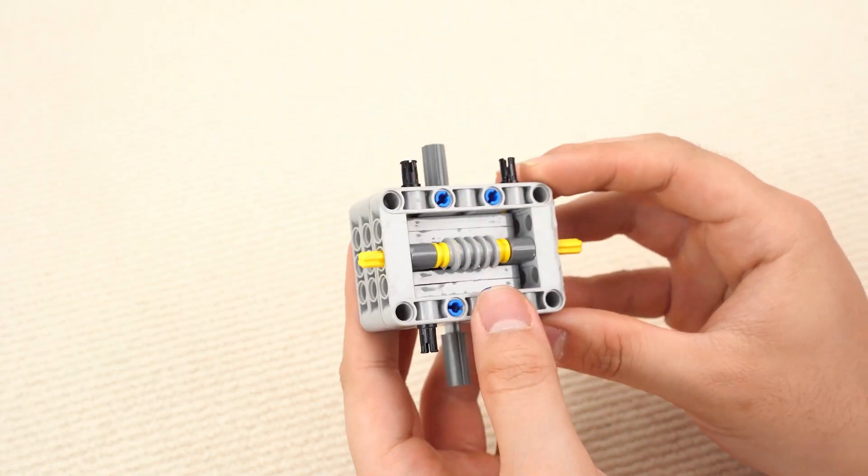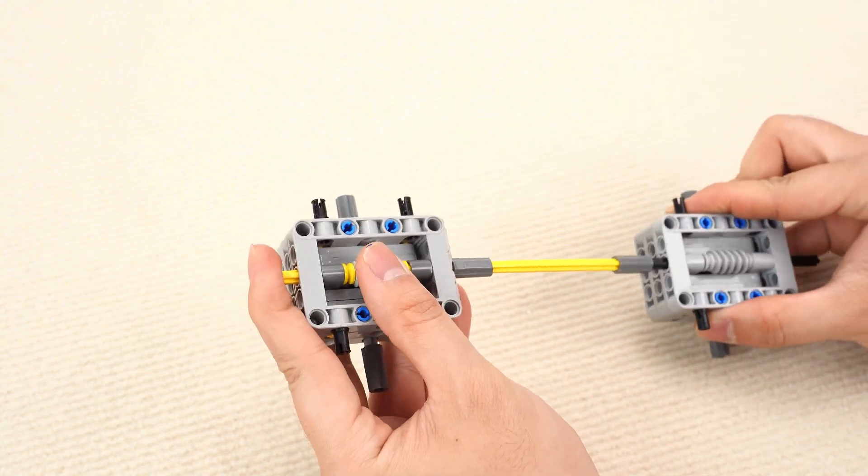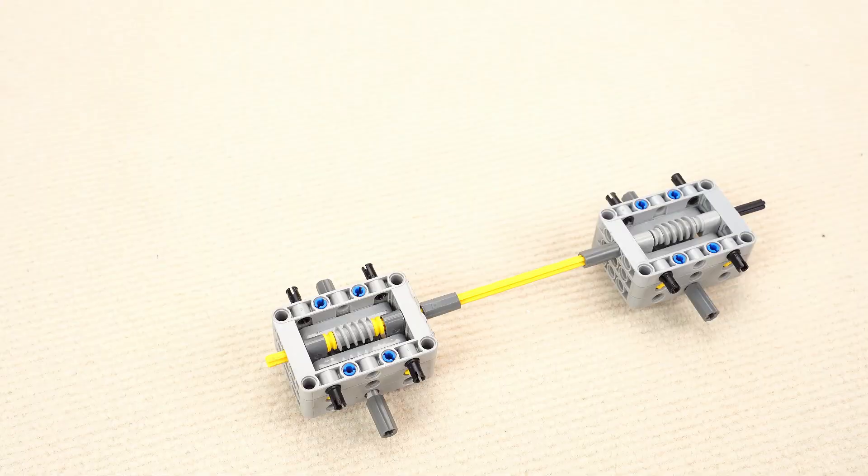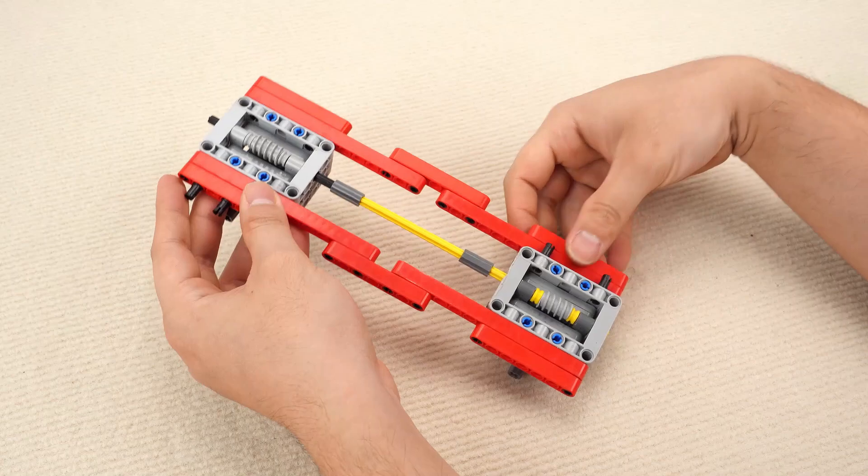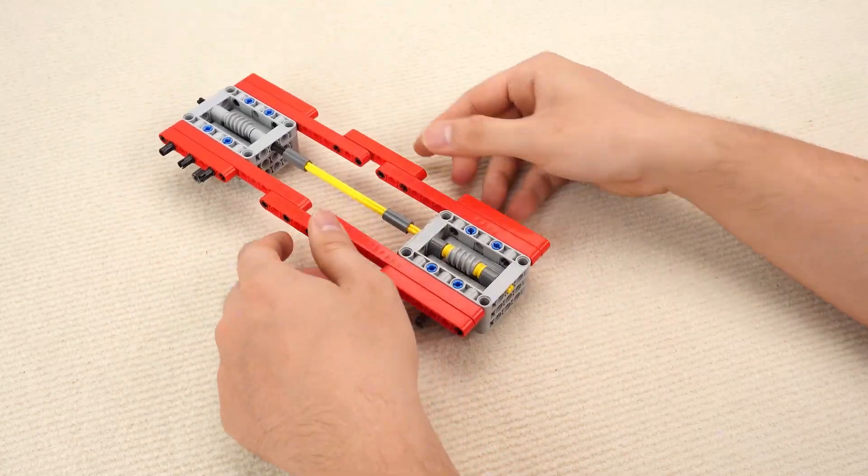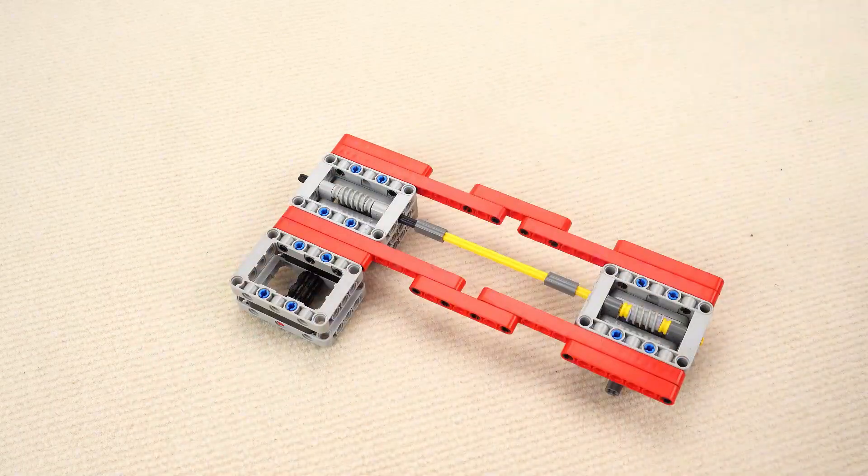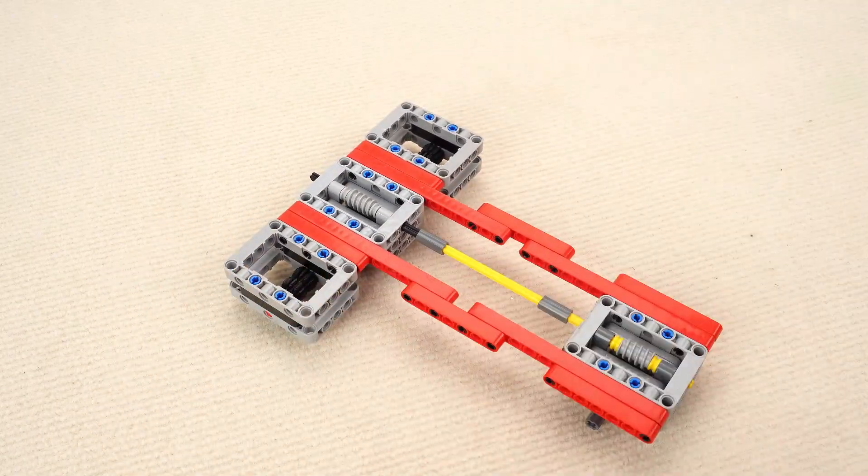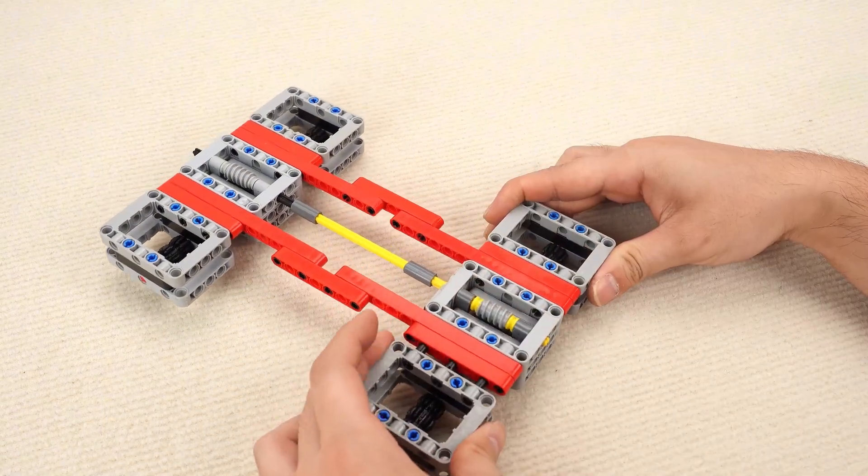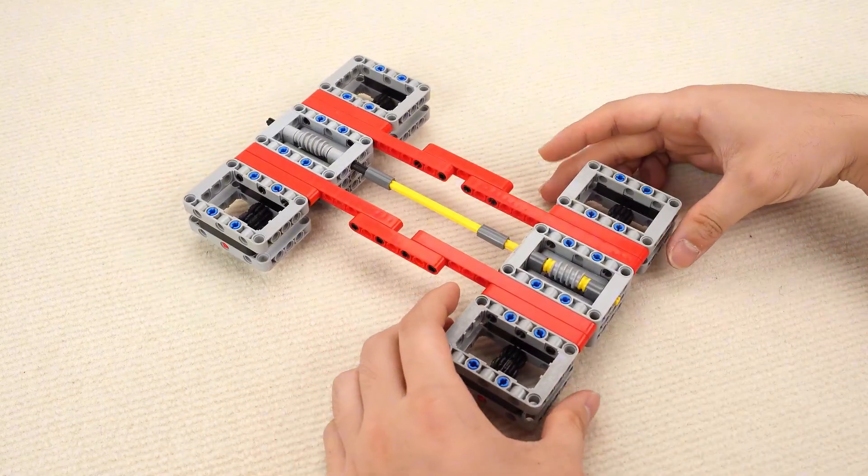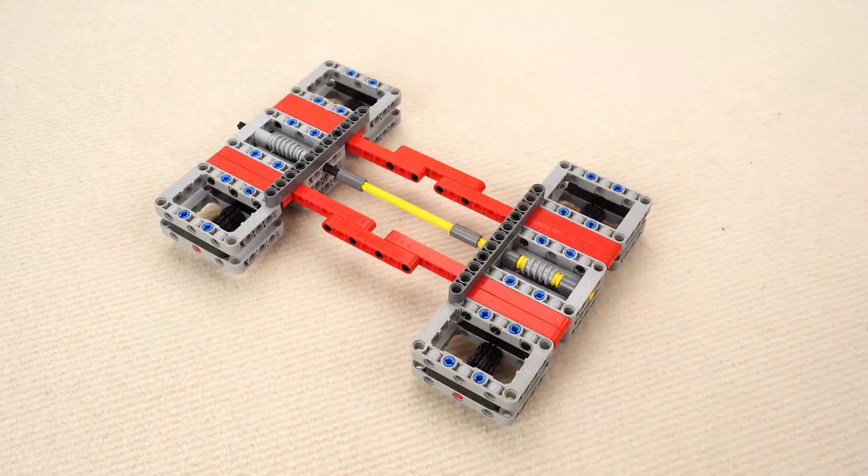Now, onto the next lifter, the lifting container frame. First, install the worm gears. Add two stabilizing bars on the sides. Then, four more worm gears. This gray bar locks them in place.